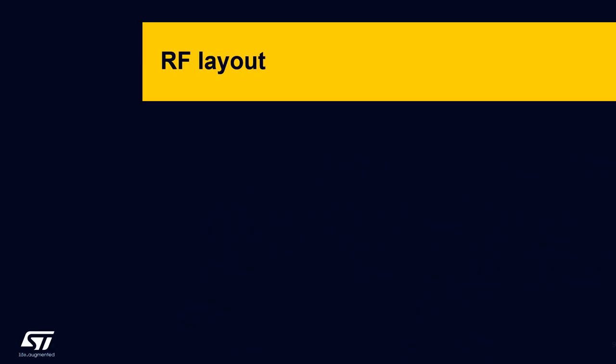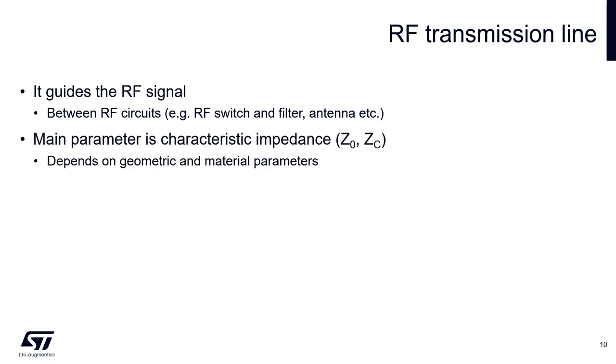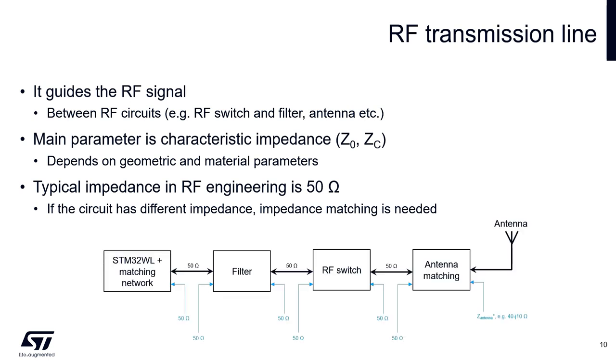The next section will focus to RF layout design. Fundamental part of the RF design is a transmission line. But what is it? We can say that it is a structure that guides the RF signal between RF circuits, for example RF switch and filter. One of the most important parameters is characteristic impedance. This impedance depends on geometric and material parameters of the layout and the PCB. Typical impedance in RF engineering is 50 ohms.